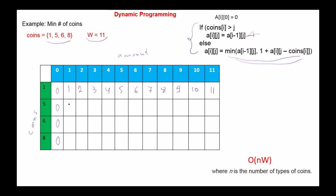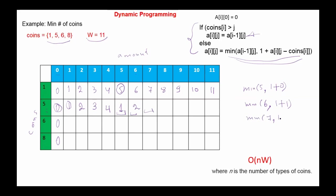Filling the table: since 5 is greater than 1, 2, 3, 4, we copy from above for those columns. For column 5 with coin 5: minimum of 5 or (1 + value at column 0) = 1. For column 6: minimum of 6 or (1 + value at column 1) = 2. For column 7: minimum of 7 or (1 + value at column 2) = 3. We continue filling in the same manner for the remaining entries.